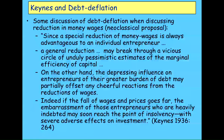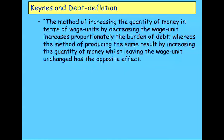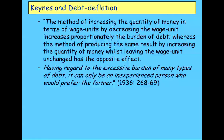Keynes said there are two ways to reduce real wages. You can cut money wages directly — which is the sort of thing the Australian government fell for in the 1930s — or you can cause inflation: keep money wages constant, put prices up. If you cut wages directly, you increase the burden of debt because prices also fall, so the debt burden rises. But if you cause inflation while keeping money wages constant, the inflation also reduces the real burden of debt. Then he said, having regard to the excessive burden of many types of debt, it can only be an inexperienced person who would prefer the former. By 'inexperienced person', he meant neoclassical economist.